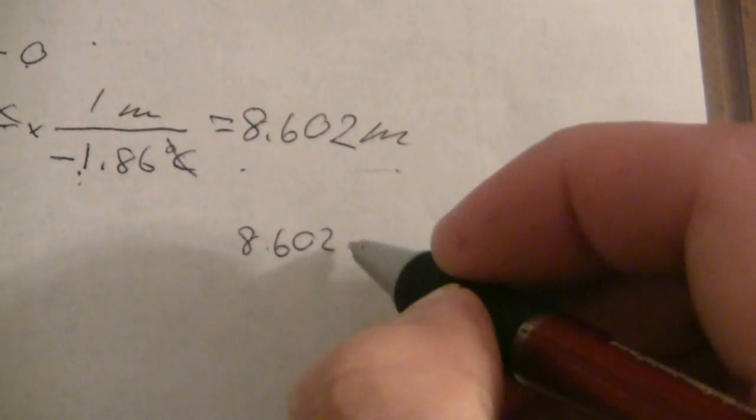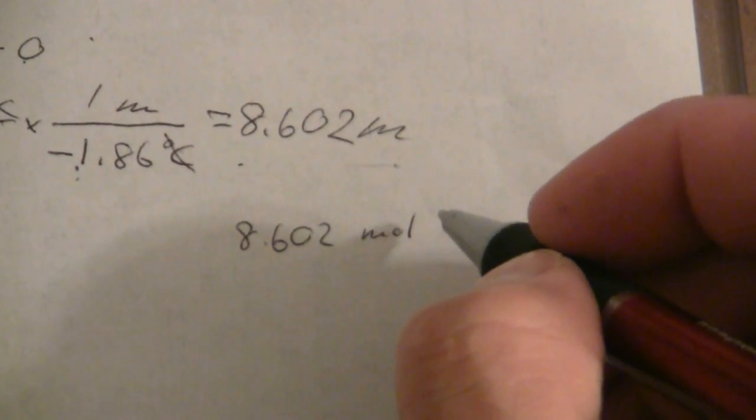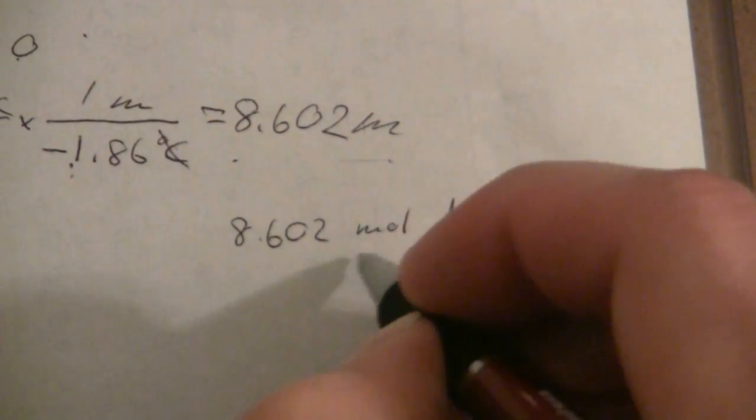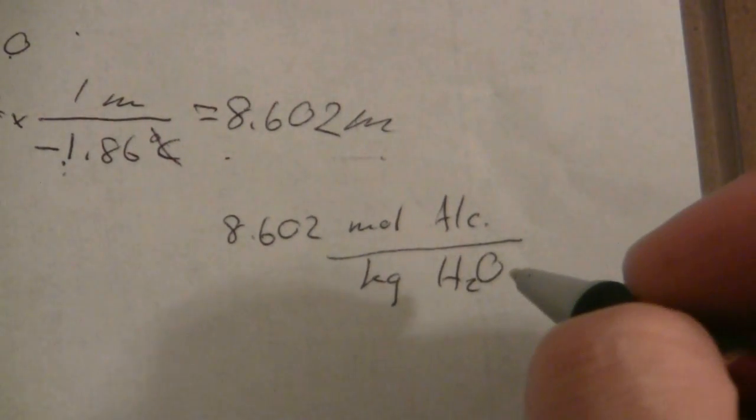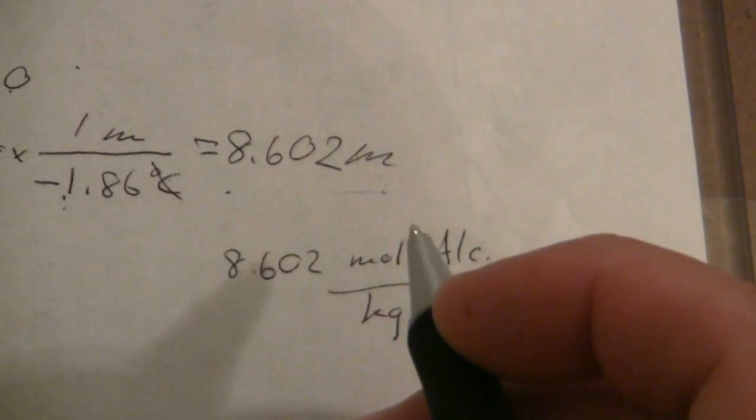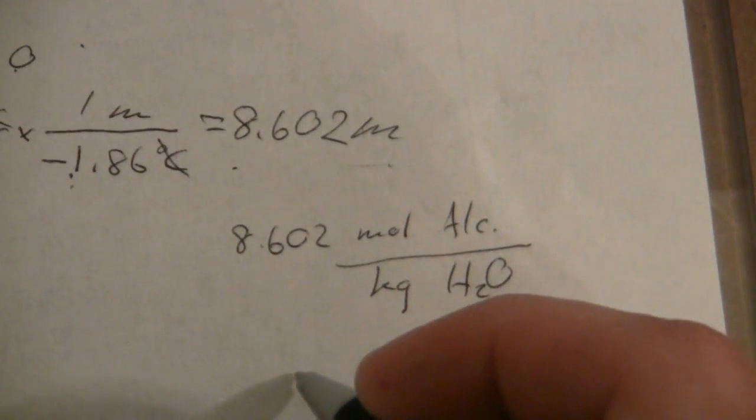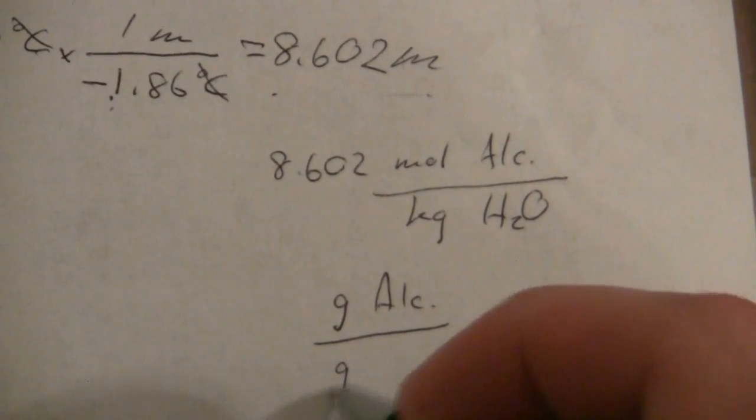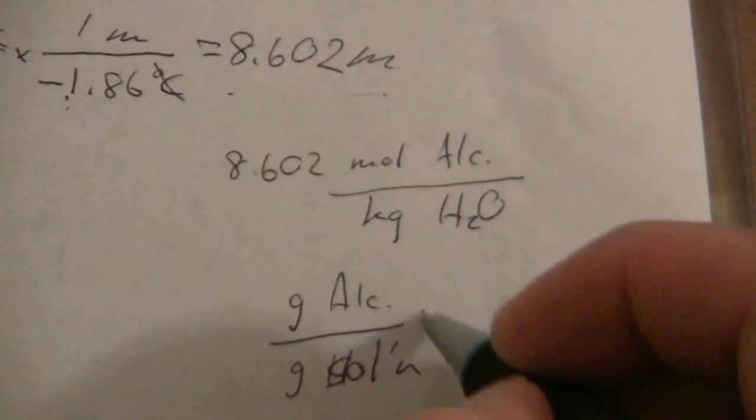Now, what is the weight percent? Well, for weight percent we need to look at this in more detail: 8.602 moles of the alcohol per kilogram of water. In order to find the weight percent—weight percent is grams of the alcohol per gram of the solution.